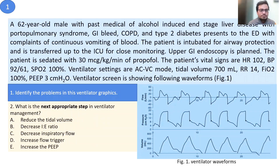A 62 year old male with past medical history of alcohol-induced end-stage liver disease with hepatopulmonary syndrome, GI bleed, COPD and type 2 diabetes presents to the emergency department with complaints of continuous vomiting of blood. The patient is intubated for airway protection and transferred to the ICU for close monitoring. Upper GI endoscopy is planned. The patient is sedated with 30 micrograms per kg per minute of propofol. Vital signs: heart rate 102, BP 92/61, saturation 100%. Ventilator settings: ACVC mode, tidal volume 700 ml, RR 14, FiO2 100%, PEEP 3 cm H₂O.